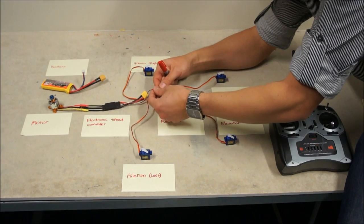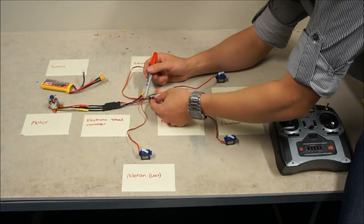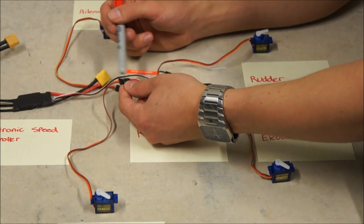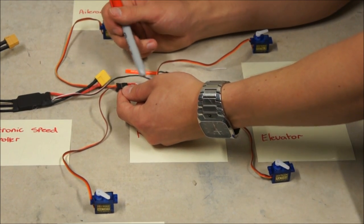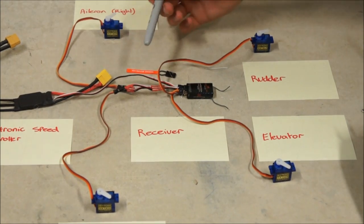So we just need to make sure that we've got the colours matching up, even though they're different colours. We've got brown to black, which is the negative, red to red, which is positive, and we've got yellow or white, which is our data line. So that's what's sending pulses to the servos and controlling them.